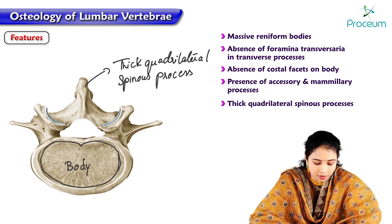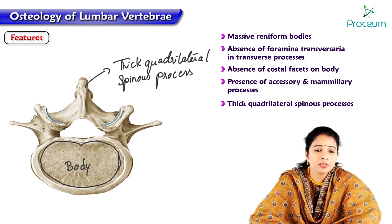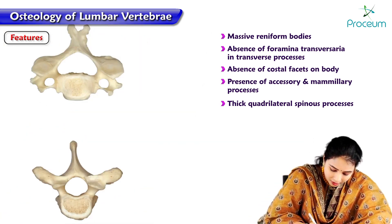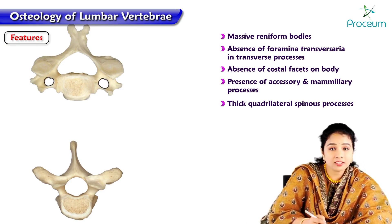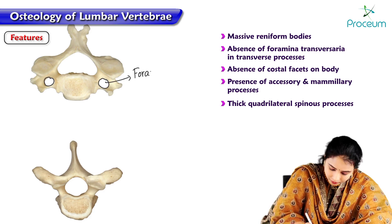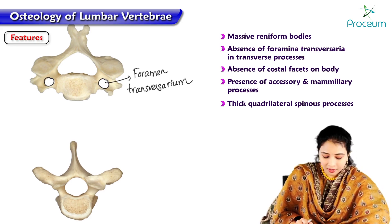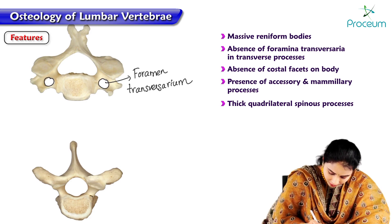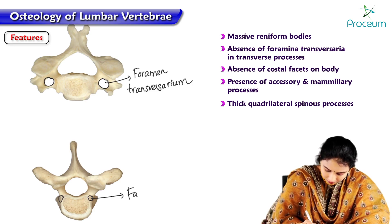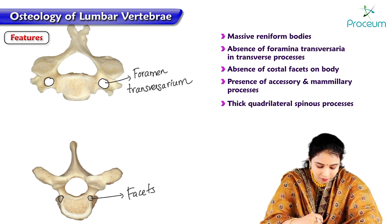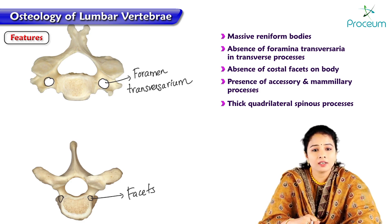These are the important features that differentiate lumbar vertebrae from thoracic and cervical vertebrae. Cervical vertebrae have foramen transversarium, which is absent in lumbar vertebrae. Thoracic vertebrae are identified by costal facets over the body, which articulate with the heads of the ribs, and these facets are absent in lumbar vertebrae.